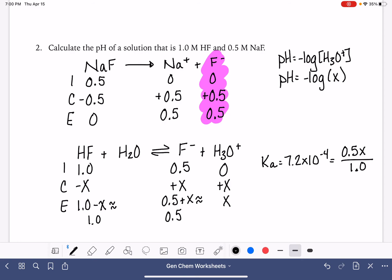And so now all we have to do is solve for X. 7.2 times 10 to the minus 4 times 1, and then divide by 0.5. We get X is equal to 0.00144.